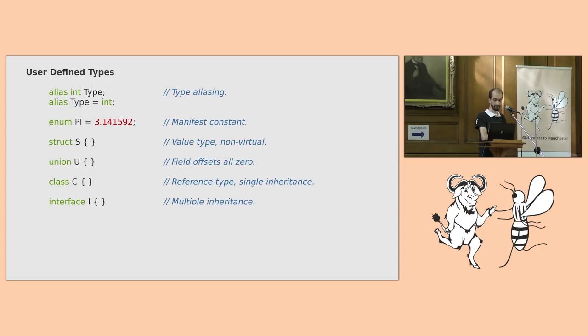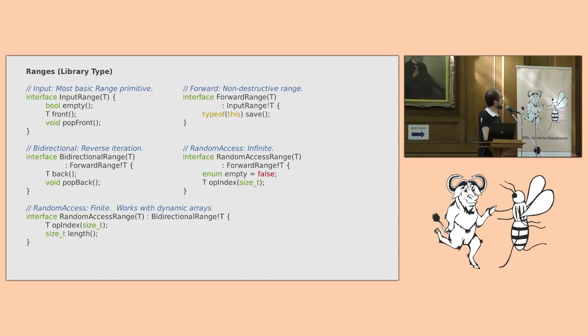Lastly, just ranges. Whilst not being a built-in language type, the compiler is aware of them. For instance, a for-each loop construct, so for-each elem range, will be lowered by the compiler as for range not empty, range pop front, and then in the first line of the body, elem equals range dot front.